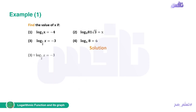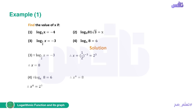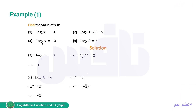Number 3: log base (1/2) of x equals negative 3. Converting: x equals (1/2) to the power of negative 3, which equals 2 to the power of 3, so x equals 8. Number 4: log base x of 8 equals 6. Converting: x to the power of 6 equals 8, which is 2 cubed. Therefore x to the 6th equals the square root of 2, all to the 6th. So the base x equals the square root of 2.